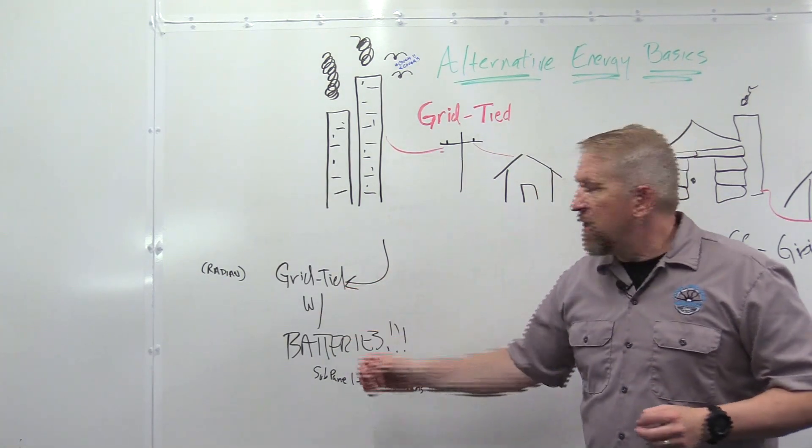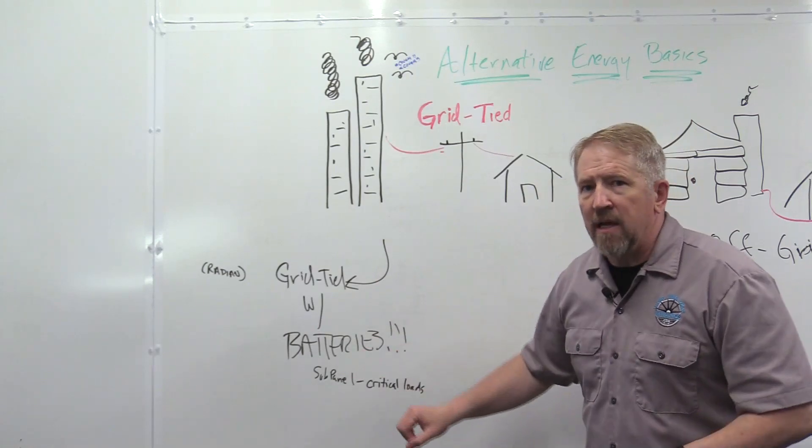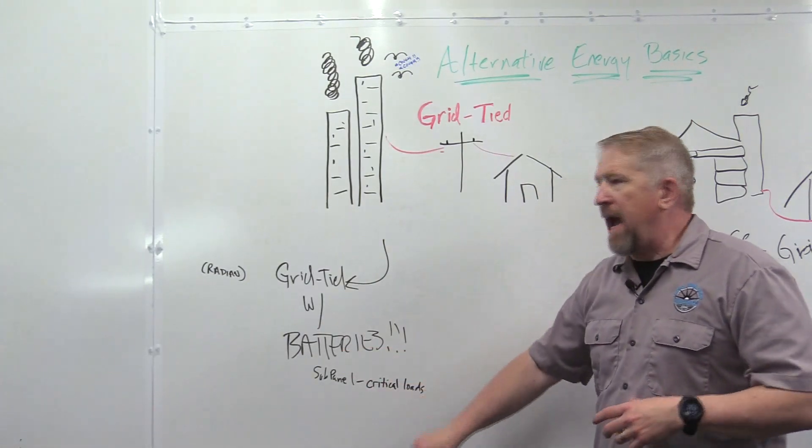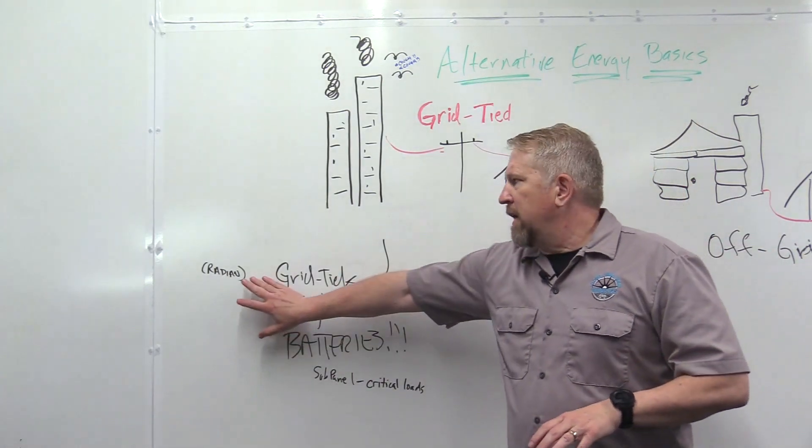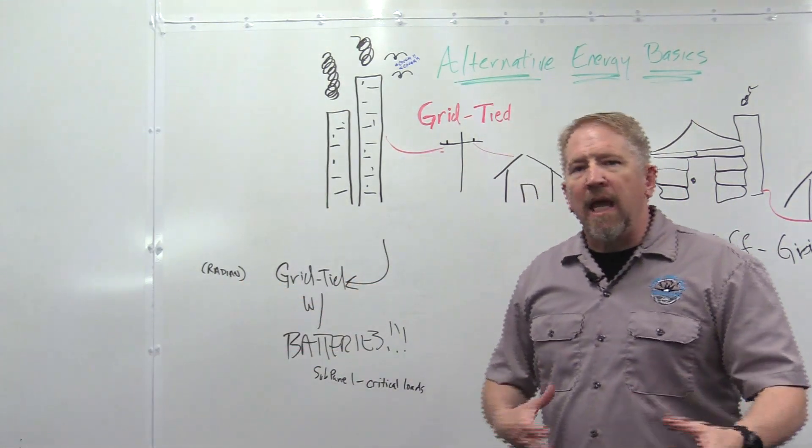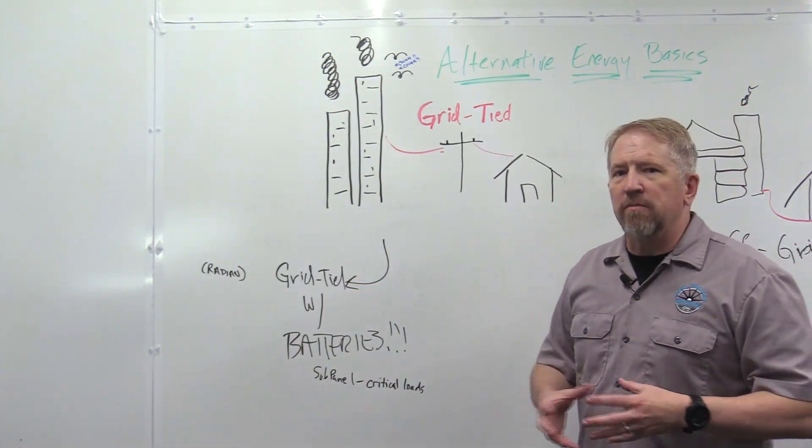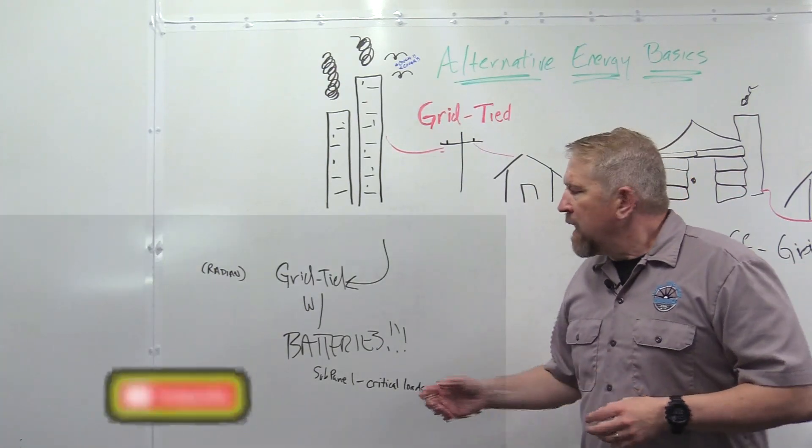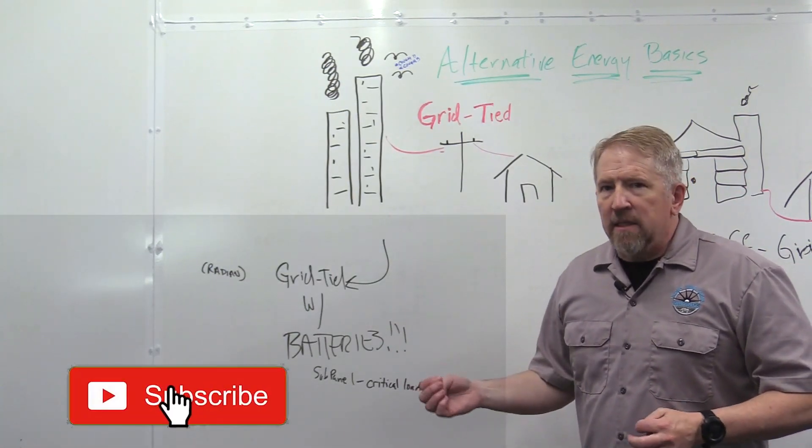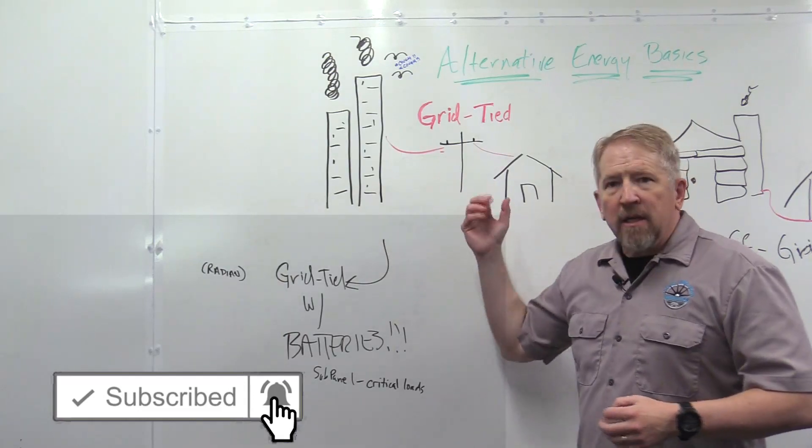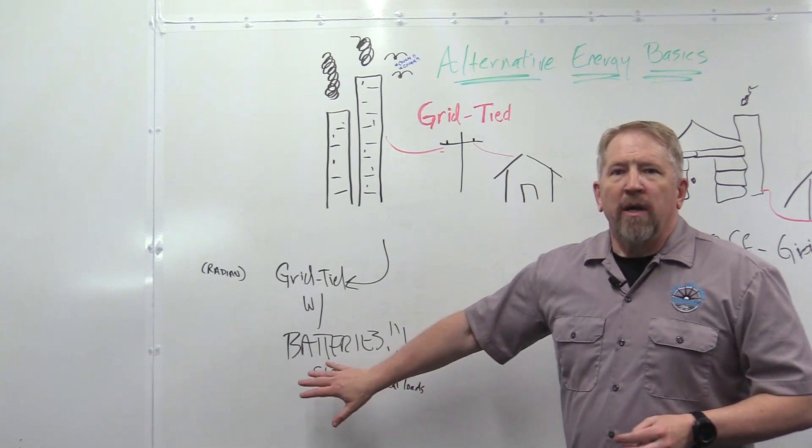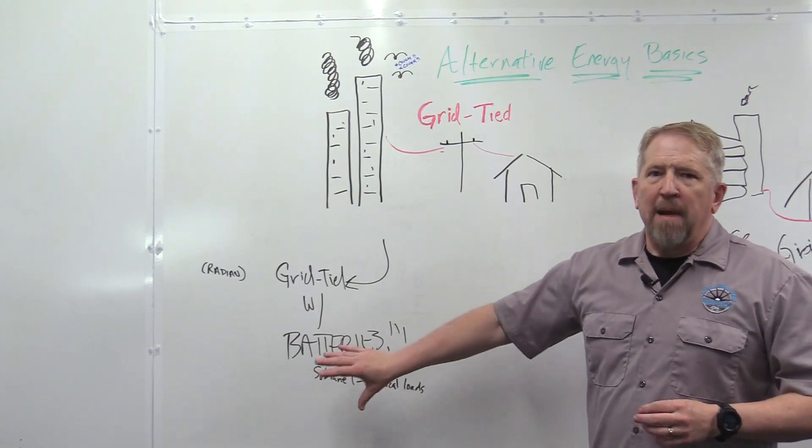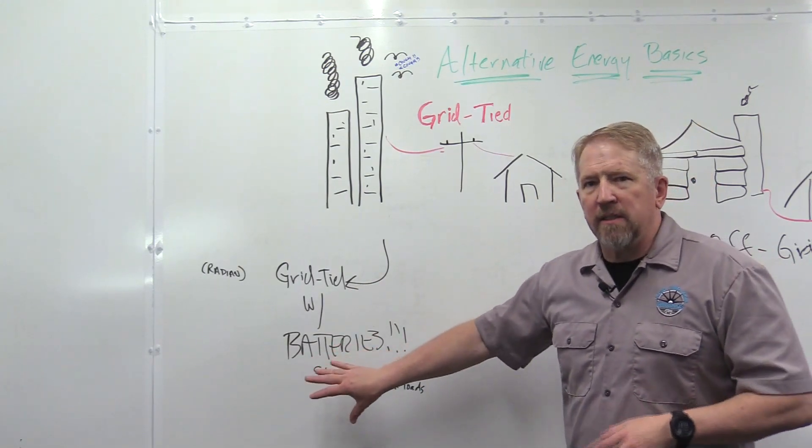Now off of grid-tied, you have a variant of that. It's grid-tied with batteries. And a typical unit that most of us carry is an Outback Radian. And what that does is it kind of best of both worlds there. And so what that does is you are grid-tied. So you're pulling from the grid as you need. But you're also storing backup energy in batteries. So this is a battery system.